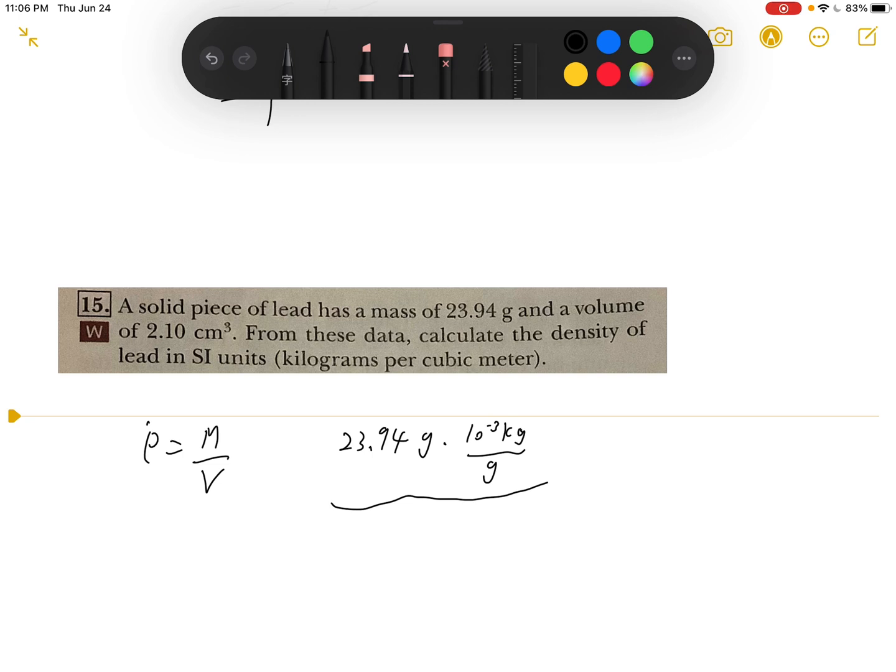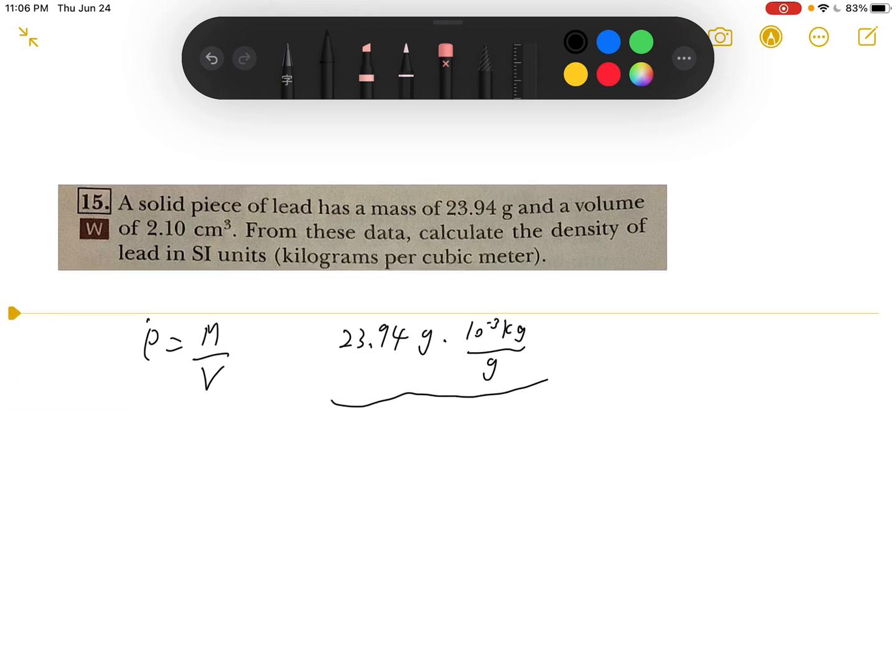Divide by 2.10 centimeters cubed times 10 to the negative 2 meters per centimeter.